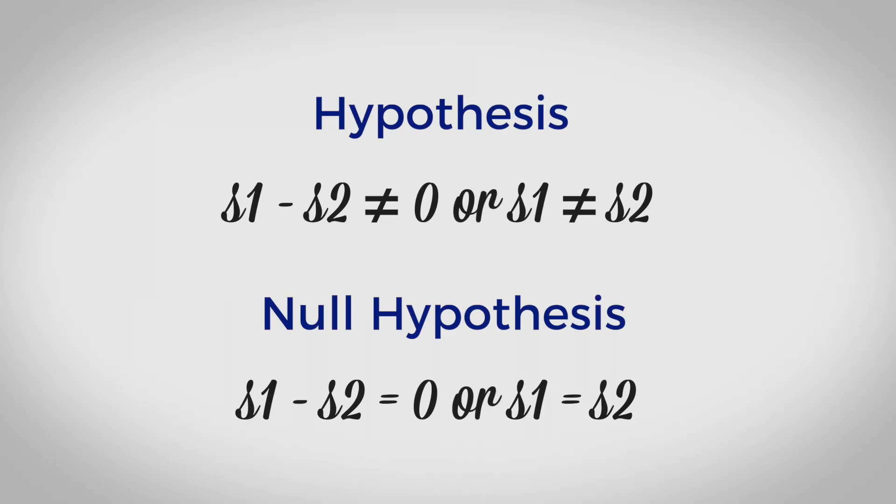A paired t-test is very different. The actual hypothesis you're testing is that sample one minus sample two is not equal to zero. Accepting the null hypothesis means there is no consistent difference between the two samples, while rejecting the null hypothesis means there is consistently a difference between sample one and sample two.